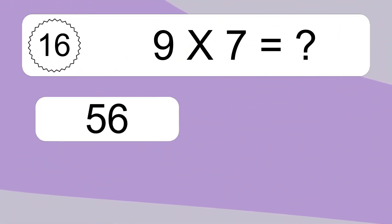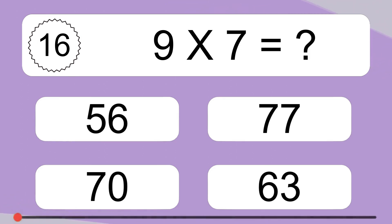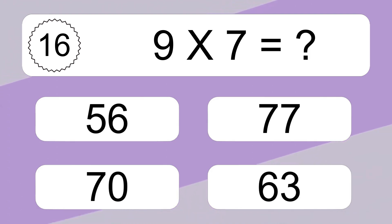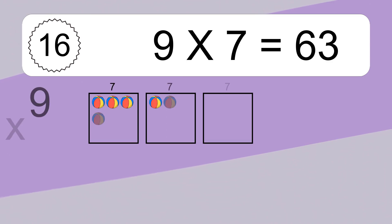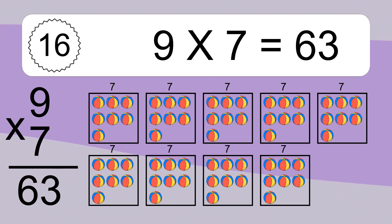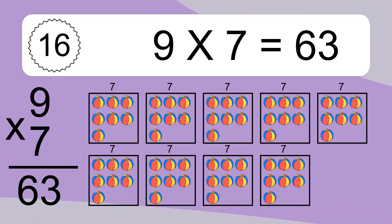9 x 7 equals what? 9 x 7 equals 63. We have 9 boxes and each box has 7 colorful balls inside. If you count all the balls in all the boxes together, you will have 9 x 7 balls. This equals 63 balls.